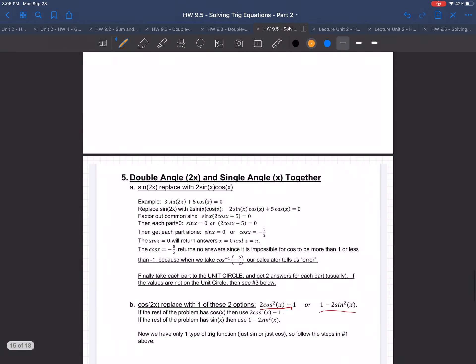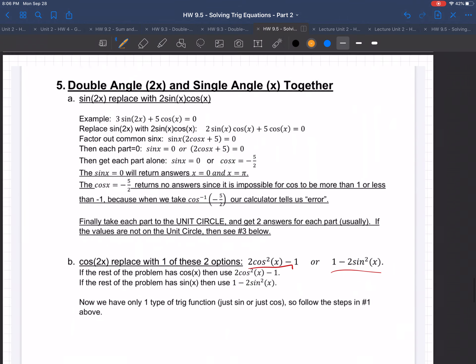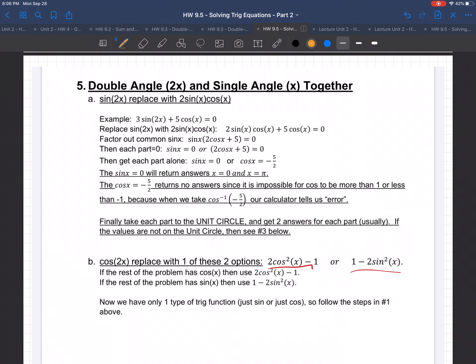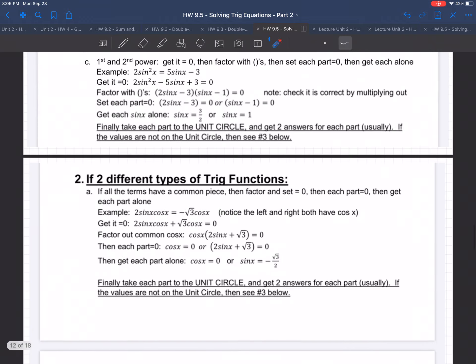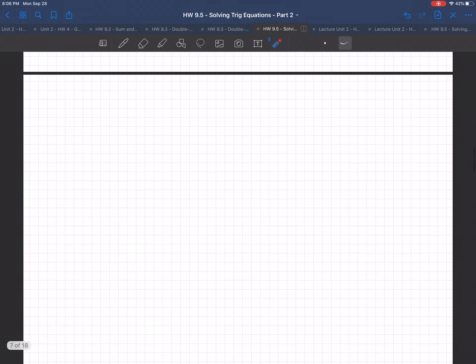If you go on down near the bottom, there it is. It's number 5 in the notes I gave you. And it says double angle 2x and single angle together. What do you do? If you have a sine of 2x, you replace it with 2 sine cosine. Then I give an example. So you replace sine 2x with 2 sine regular x cosine regular x. Let's do that. So that's our first and most important step.